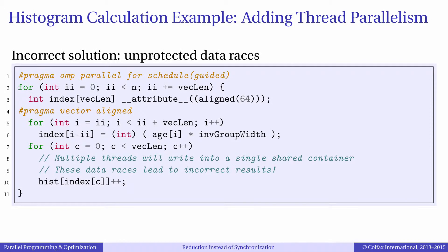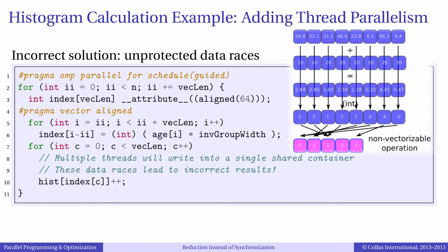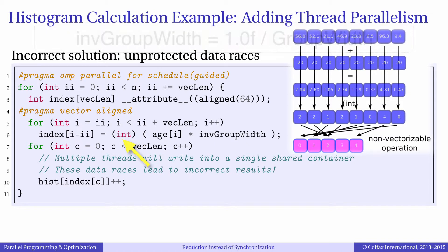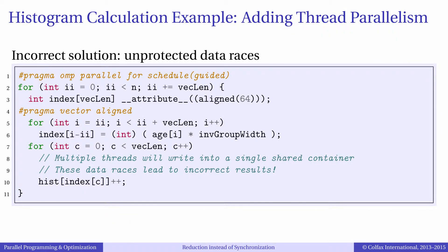In episode 5.6 we optimized an example application which performs binning of people's ages and computes the age distribution. Our input data is a large array containing ages of people from 0 to 100 years. For each person we find their age group by dividing their age by 20 years and rounding the result down to an integer, then we increment the histogram bin corresponding to that age group. To partially vectorize this calculation we used strip mining and split the loop into two loops: one performing only vector calculations and the other performing only scalar calculations.